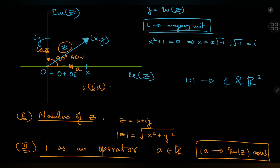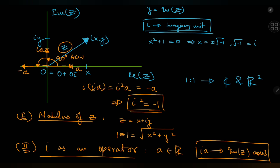What about the second application of the operator, which is equivalent to i²a? A second application means another rotation by 90 degrees anti-clockwise, giving a vector lying completely on the negative real axis at a distance of a units from the origin. So i²a = −a, which gives us i² = −1 — a pretty cool way of visualizing what exactly the imaginary unit does.